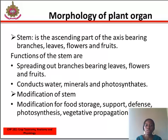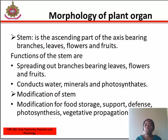Morphology of plant stem: the stem is the ascending part of the axis bearing branches, leaves, flowers, and fruit. Functions of the stem: 1. They help in spreading out branches bearing leaves, flowers, and fruit. 2. They conduct water, minerals, and photosynthates. 3. Some stems perform the function of storage of food, support, protection, and vegetative propagation.